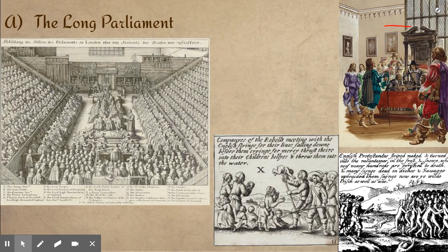This begins what's called the Long Parliament, because this is the Parliament that's going to be sitting throughout the entire Civil War. Charles calls Parliament, he demands that they give him money, they refuse, and in the end, both sides start raising their own separate armies in order to deal with this problem.